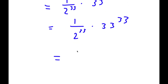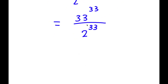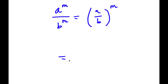This is equal to 33 to the power of 33 over 2 to the power of 33. If I have something in the form a to the power of m over b to the power of m, this is equal to a over b to the power of m. So 33 to the power of 33 over 2 to the power of 33 equals 33 over 2 to the power of 33.